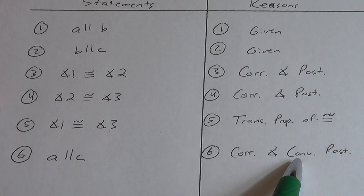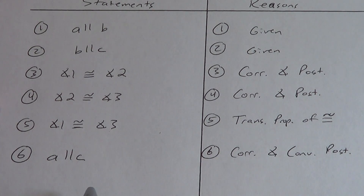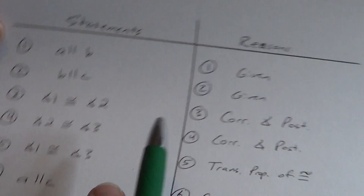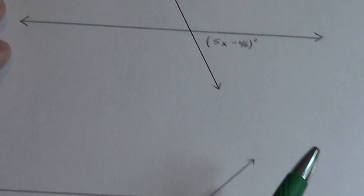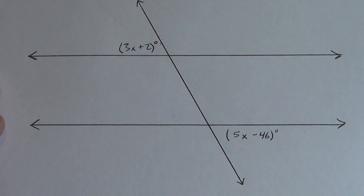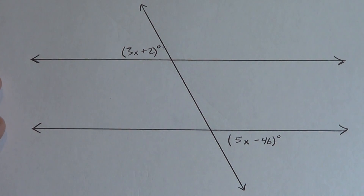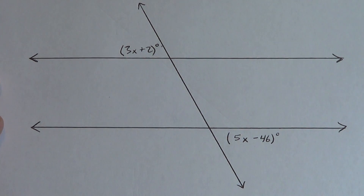In this proof we used the regular corresponding angle postulate twice — because we already knew the lines were parallel and went to congruent angles. Then we used the transitive property to get here. When we go from congruent angles to parallel lines though, we switch the order — that's why we have to put the word 'converse' in there.